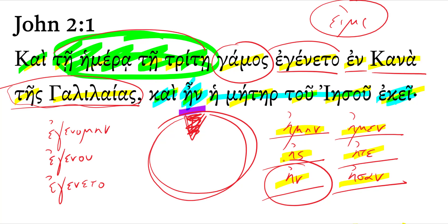So that third person singular form is right there. It's third singular because the subject is the mother - the mother of Jesus was there. Then we have this verb, egeneto.